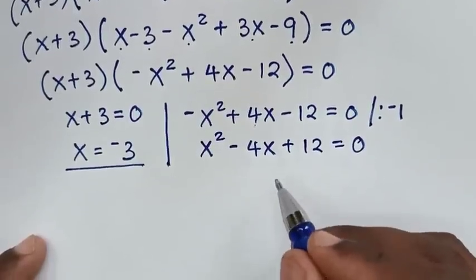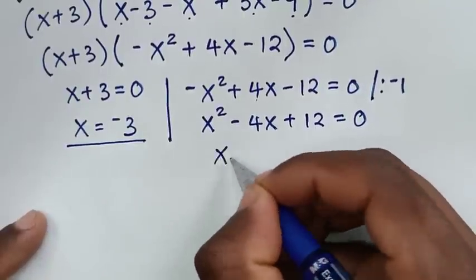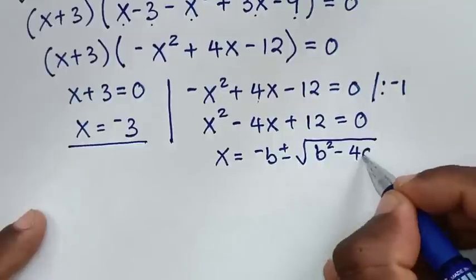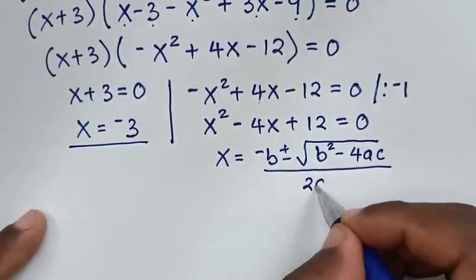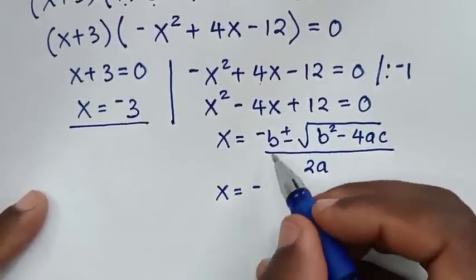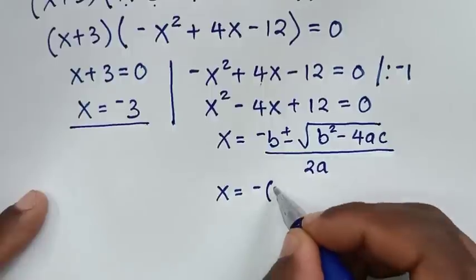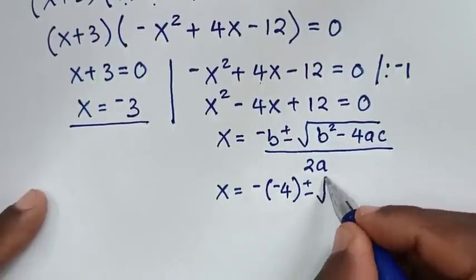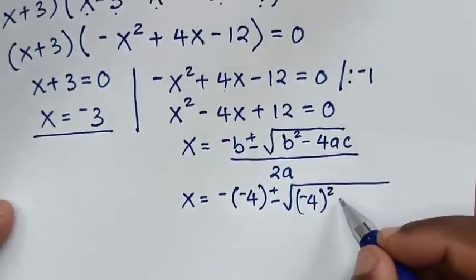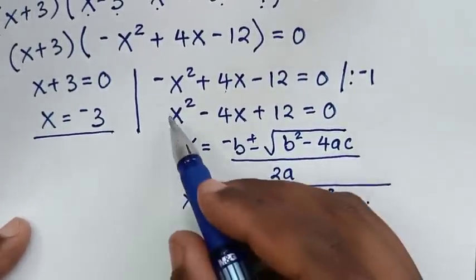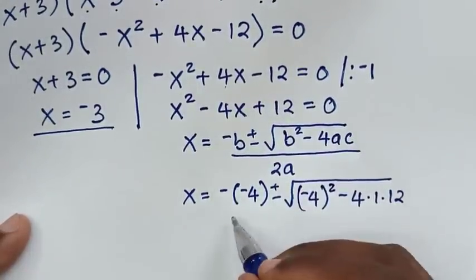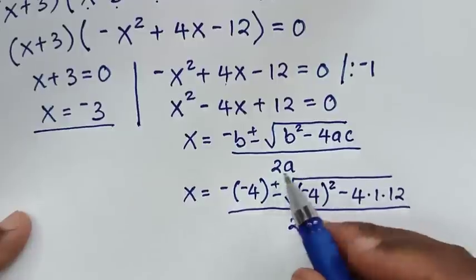To find the values of x we use the quadratic formula: x equals negative b plus or minus square root of b squared minus 4ac, all over 2a. Here b is negative 4, a is 1, and c is 12.